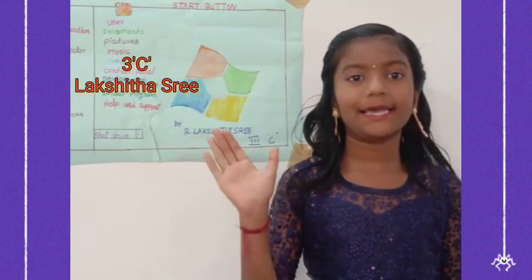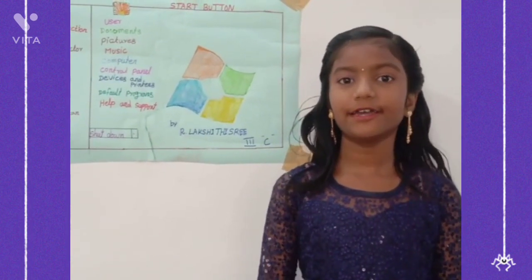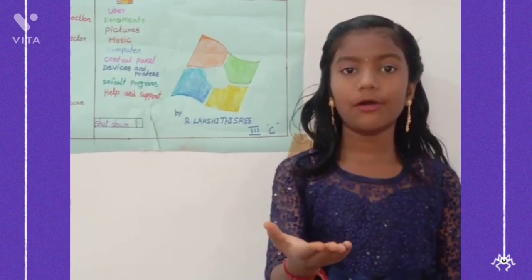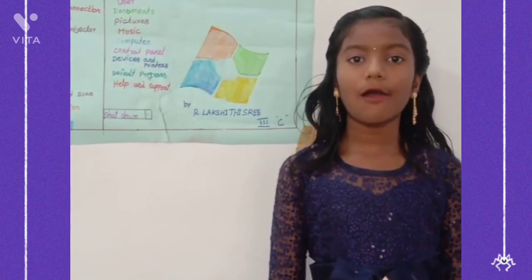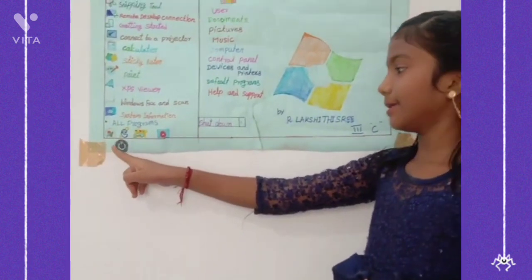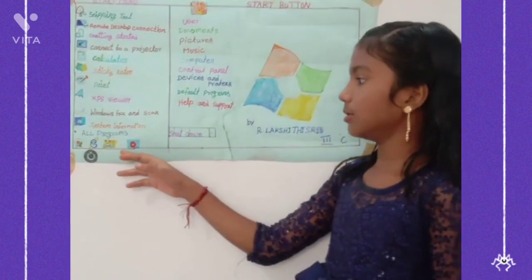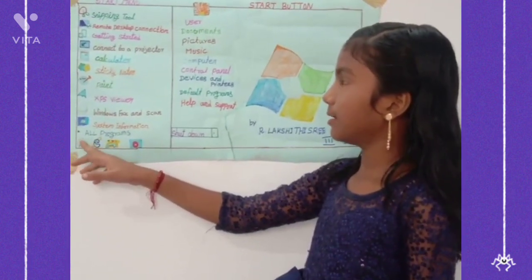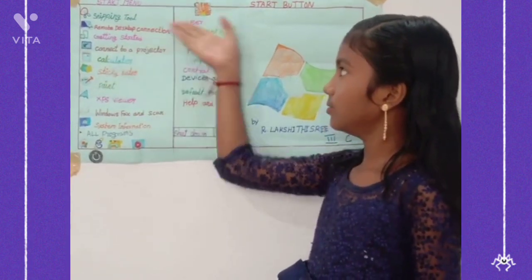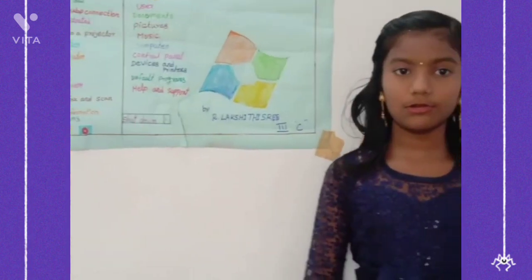Hi everybody. I am Lexi Dusty, studying in C section in Korma Public School. Today I am going to show you how to open our PC and how to shut it down. This is the power button — click the power button and the system turns on. This is the Start button — click the Start button and the Start menu appears. Click the Shut Down button and the system will begin closing.